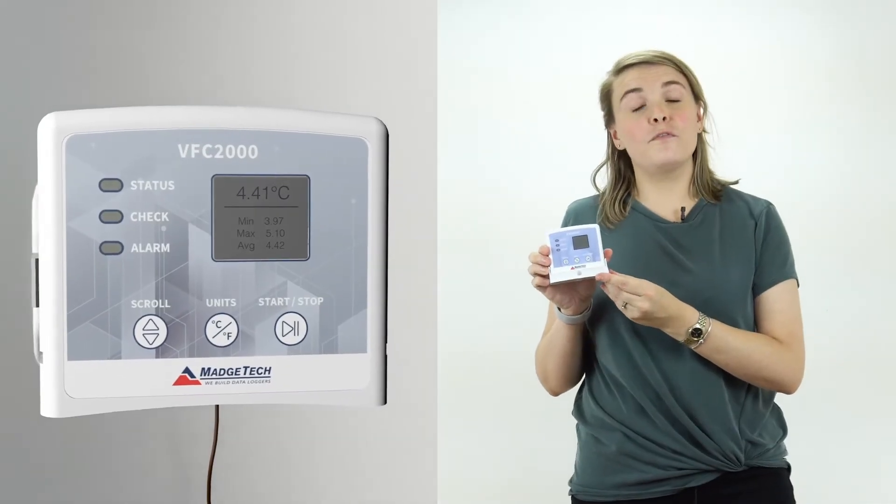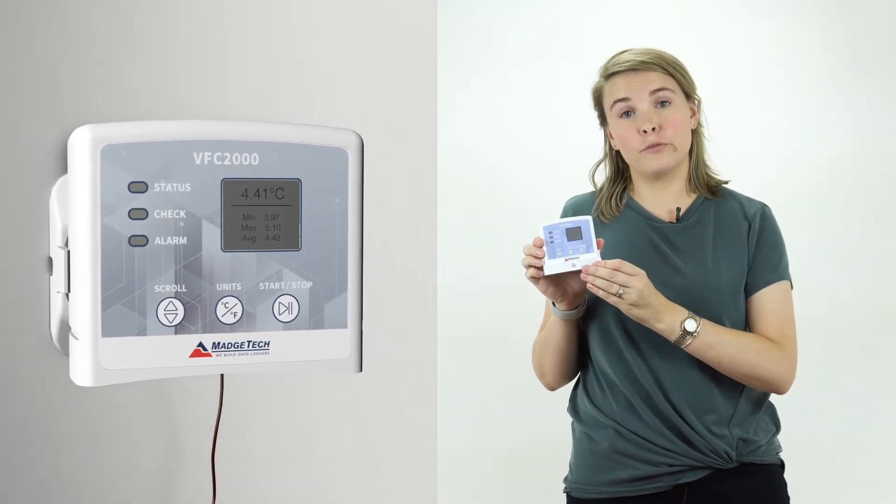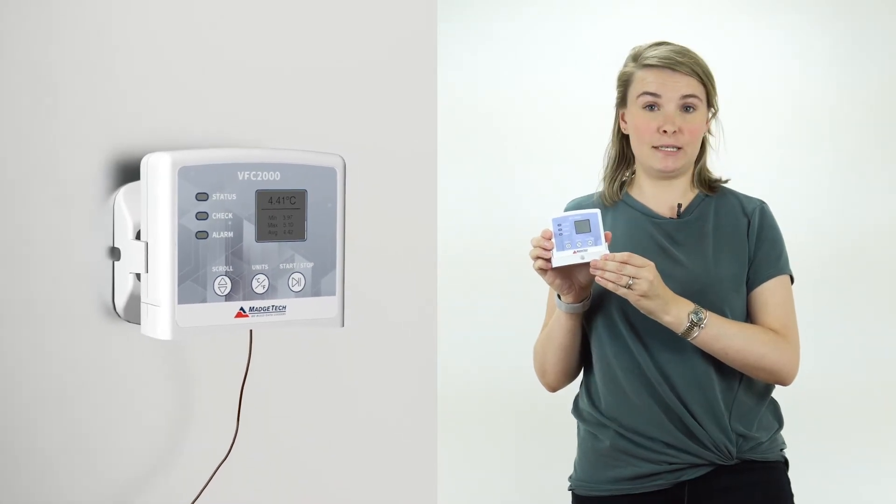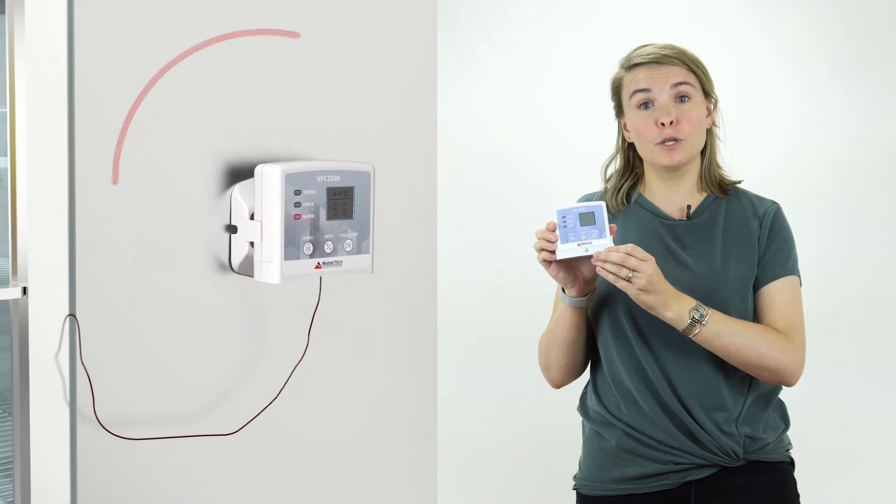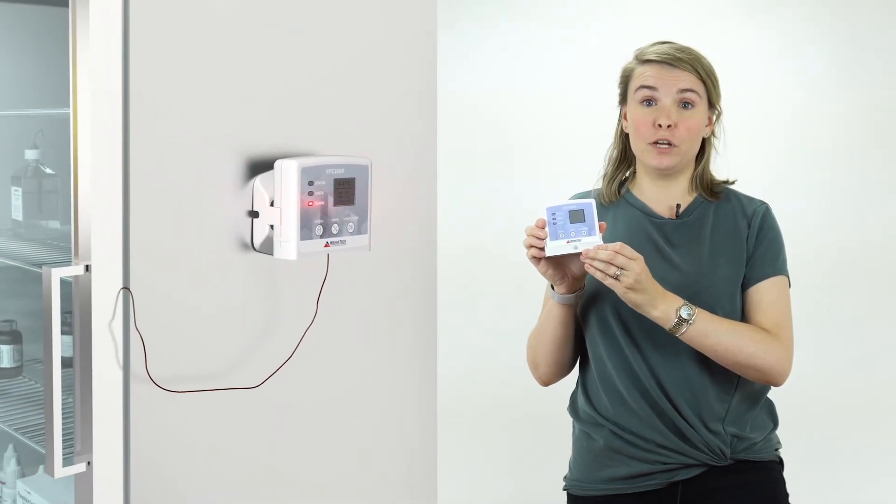The data logger itself features an LCD screen which shows current readings as well as minimum, maximum, and average statistics. The device is also equipped with user-programmable alarms which can alert you if there is an out-of-range reading.